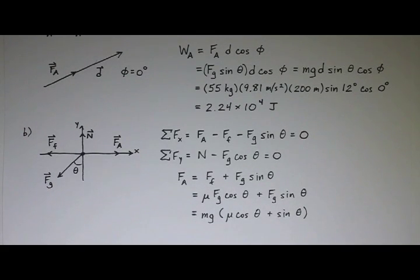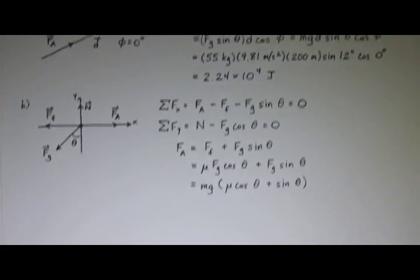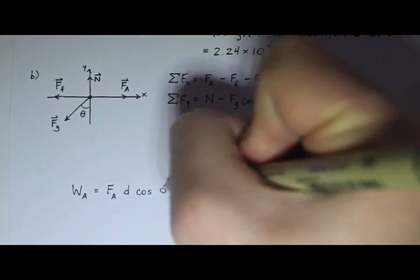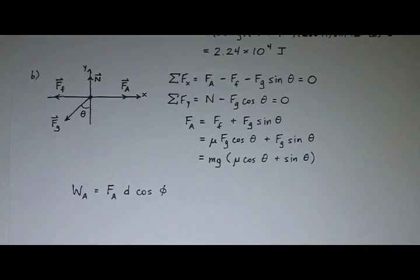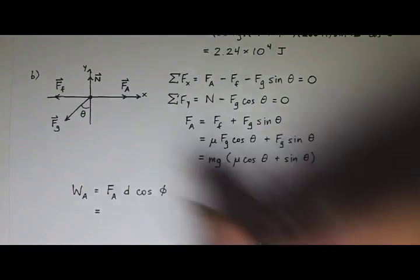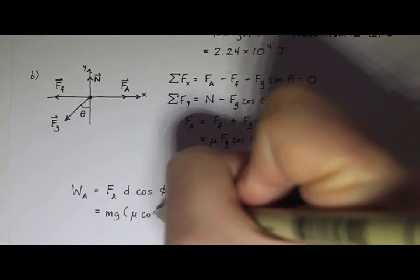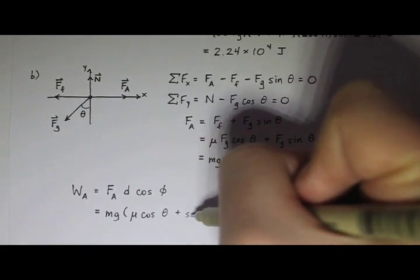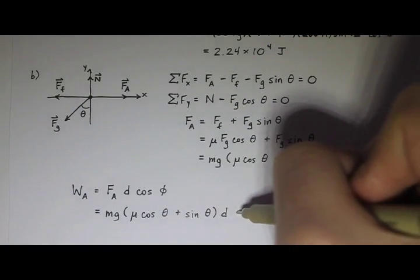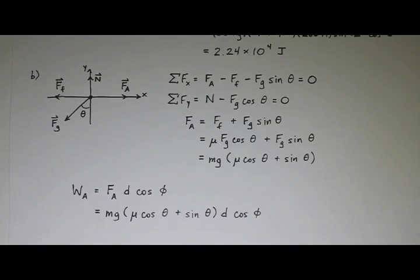The angle between the applied force and the displacement is still zero degrees — that didn't change. So the work done by the applied force is the magnitude of the applied force times the displacement times the cosine of phi, where phi is different from theta. The applied force is mg times (mu cosine theta plus sine theta), multiplied by the displacement times the cosine of phi.